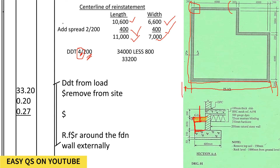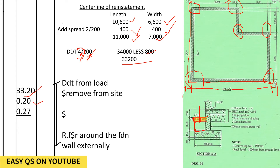The corners are determined by taking the number of external corners — one, two, three, four, five — and deducting the number of internal corners, which is one. We remain with four corners. We multiply by the thickness of the foundation spread to get 800. So 34,000 minus 800 gives us 33,200. That is our center line, multiplied by the thickness of the spread and the depth down to the reduced level.